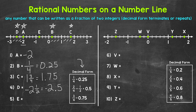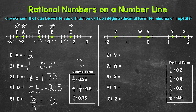We can wrap up this first number line with number five. We have point E, which is between zero and negative one. We have negative one fourth, negative two fourths (or negative one half), and then negative three fourths. So point E is at negative three fourths, written as a decimal: negative 0.75.